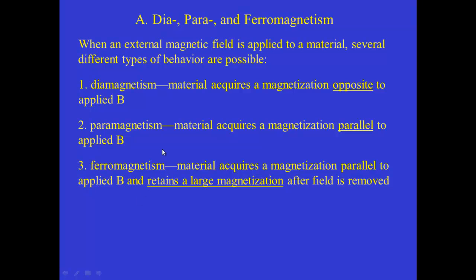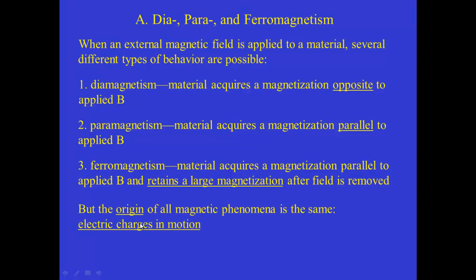When we think of magnets, usually we're thinking of materials like iron, nickel, and cobalt, which under the right conditions are ferromagnetic — they stay magnetized even when taken out of the external magnetic field. But in all cases the origin of magnetic phenomena is the same and it always comes from electric charges in motion.